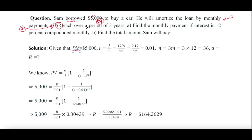but in this question they denote it by capital R — it is the same. Each payment over a period of 3 years, therefore the number of installments will be 3M, which equals 3 into 12, which equals 36. Find the monthly payment if interest is 12% compounded monthly: M equals 12 and J equals 12%. You need to calculate capital R.